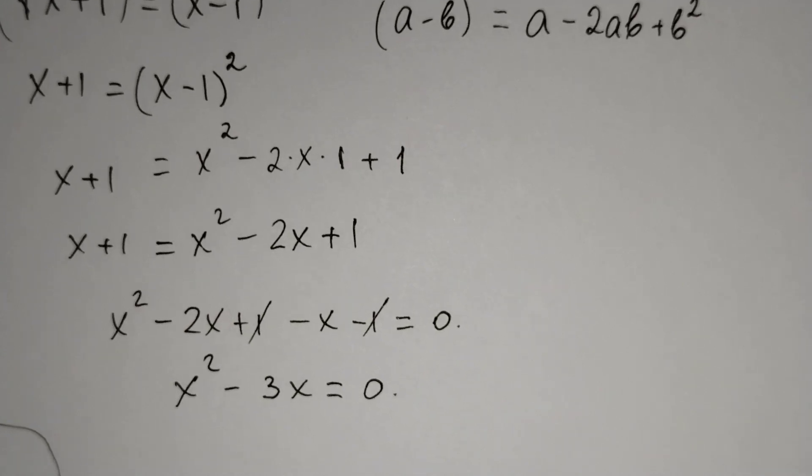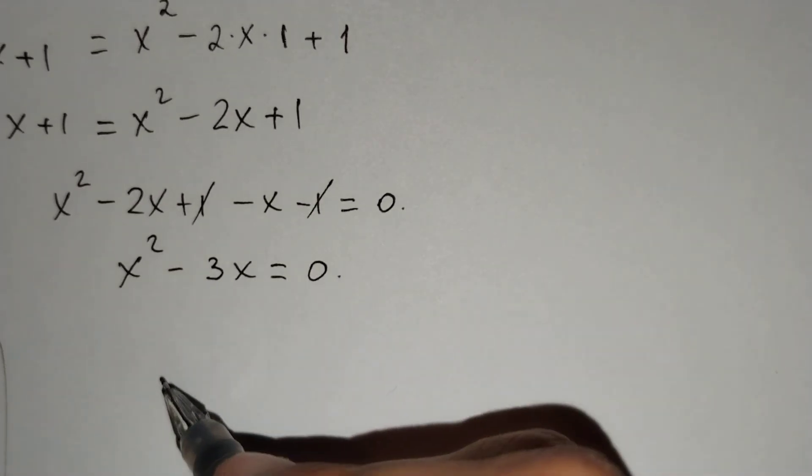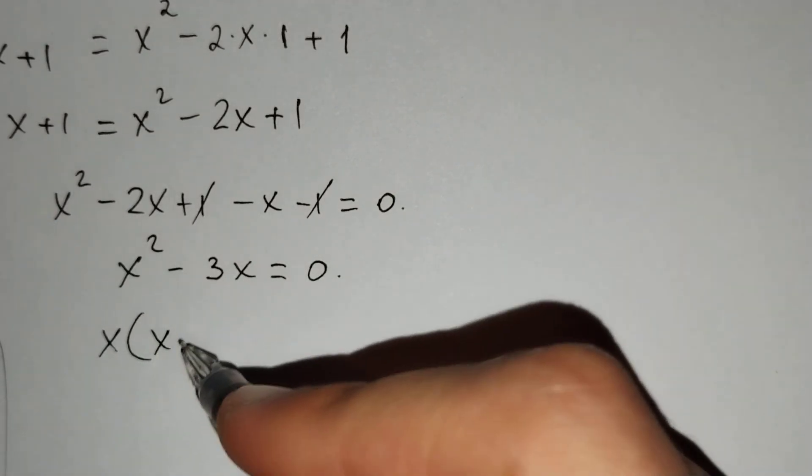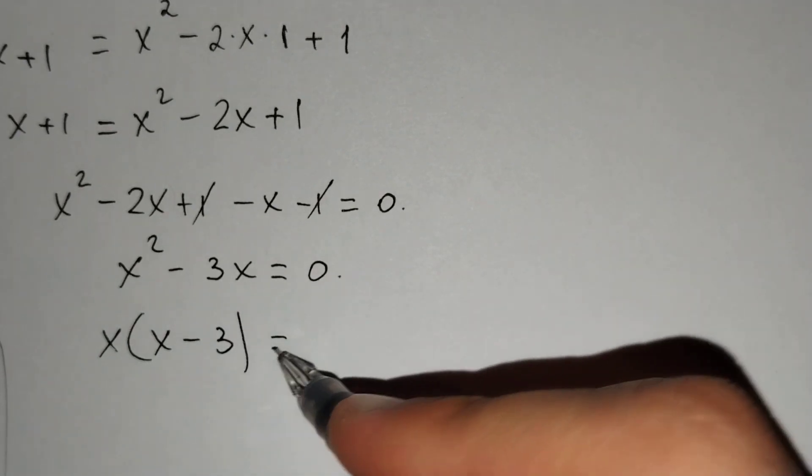And then, if we take x out of the brackets, it's x times x minus 3 equals 0.